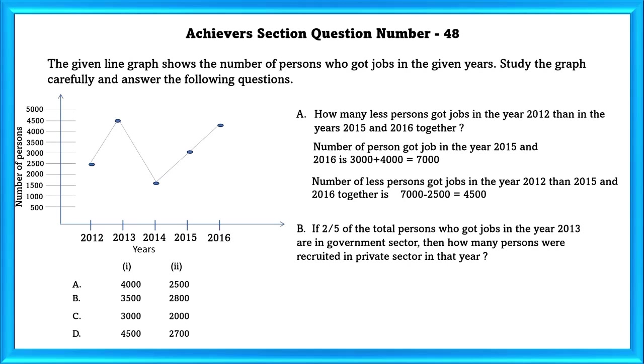B: If 2 by 5 of the total persons who got their job in the year 2013 are in government sector, then how many persons were recruited in private sector in that year? Total number of persons got job in 2013 is equal to 4,500.